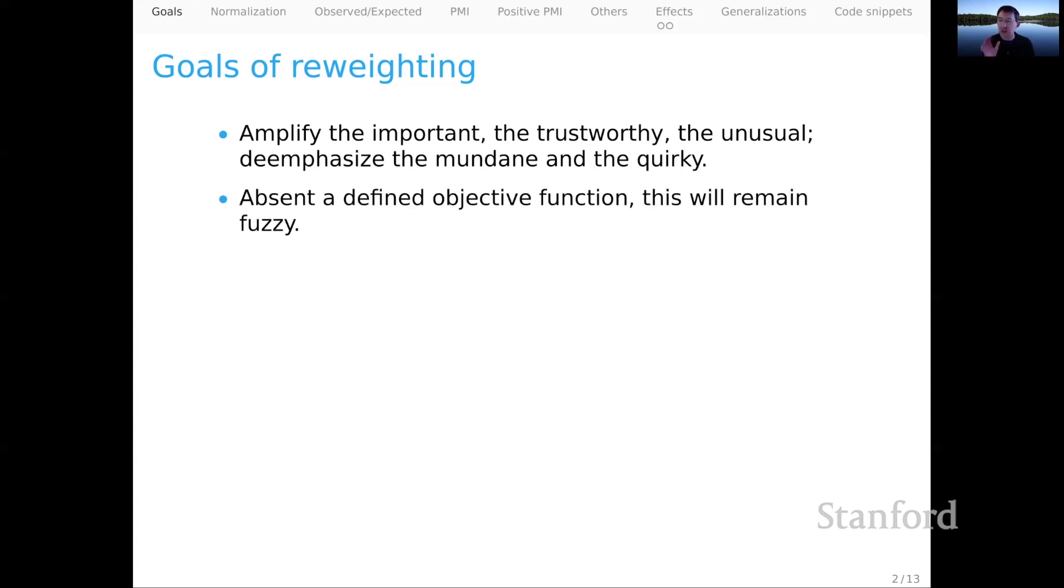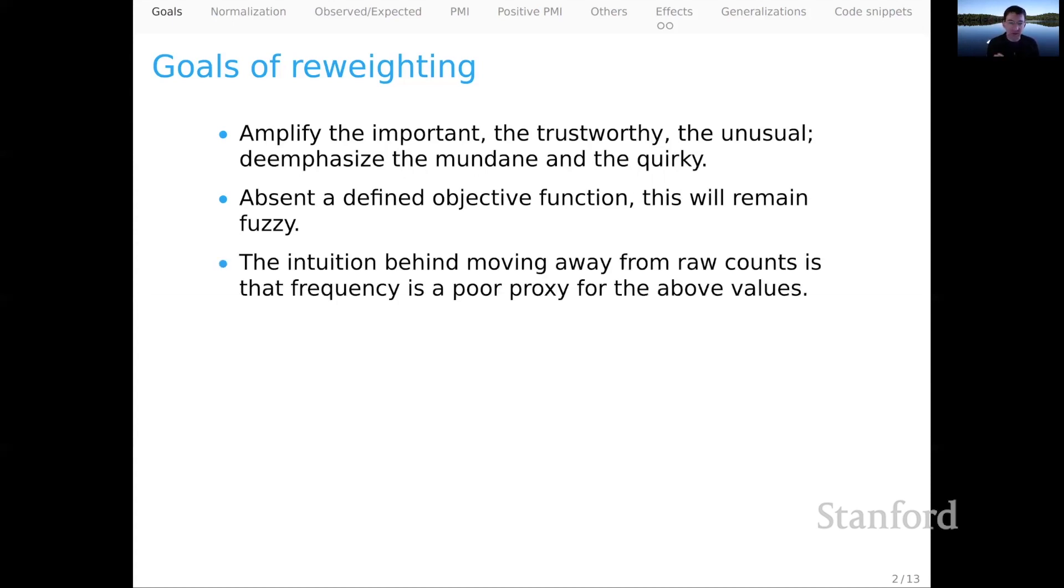Of course, absent a defined objective function in the machine learning sense, this is going to remain a fuzzy goal. But we do have some quantitative hooks. We have this guiding intuition that we would like to move away from raw counts because frequency alone is generally a poor proxy for the kind of semantic information that we hope to extract.